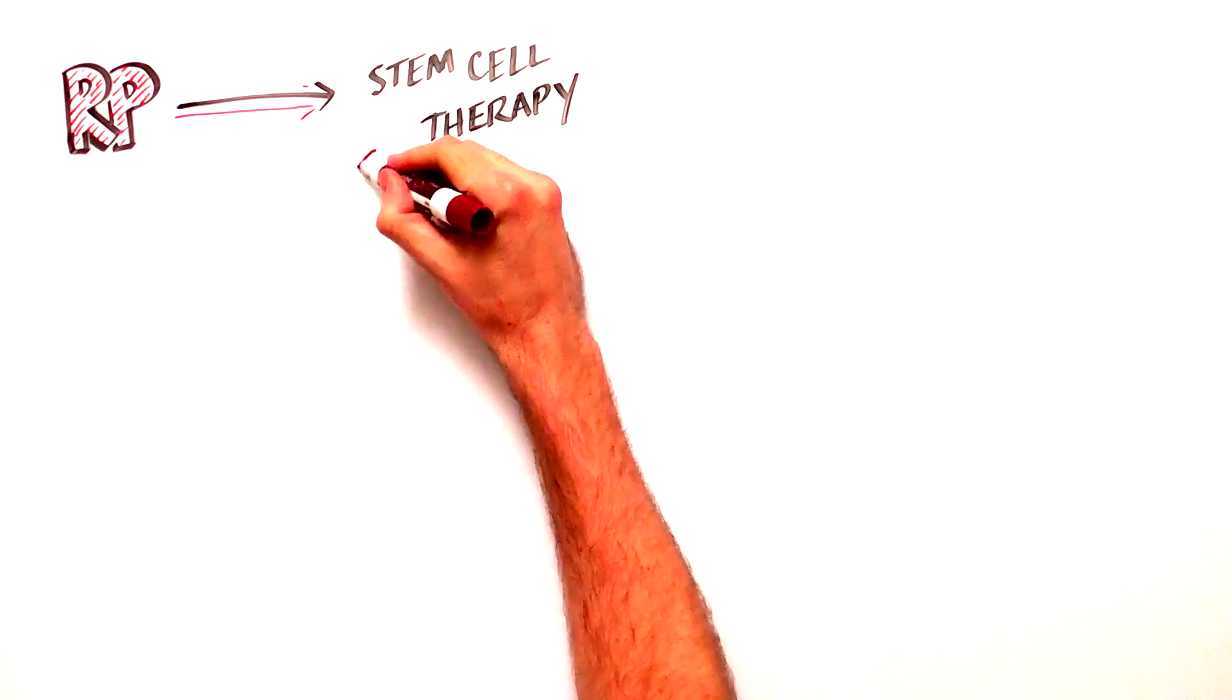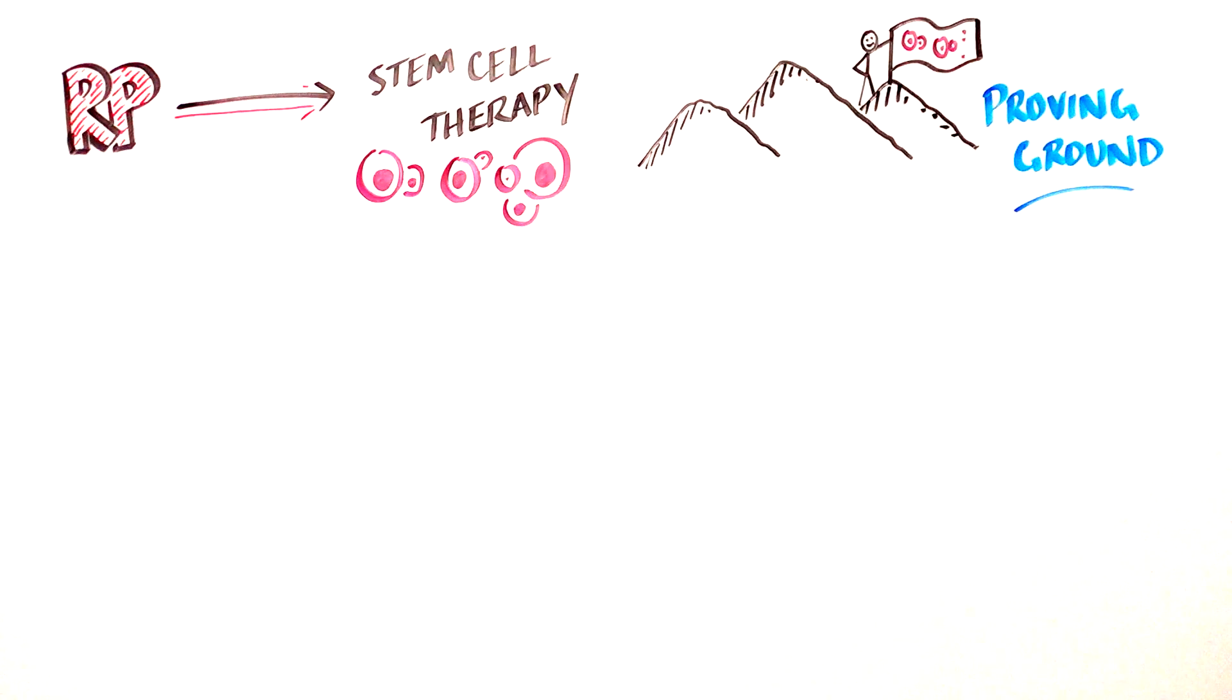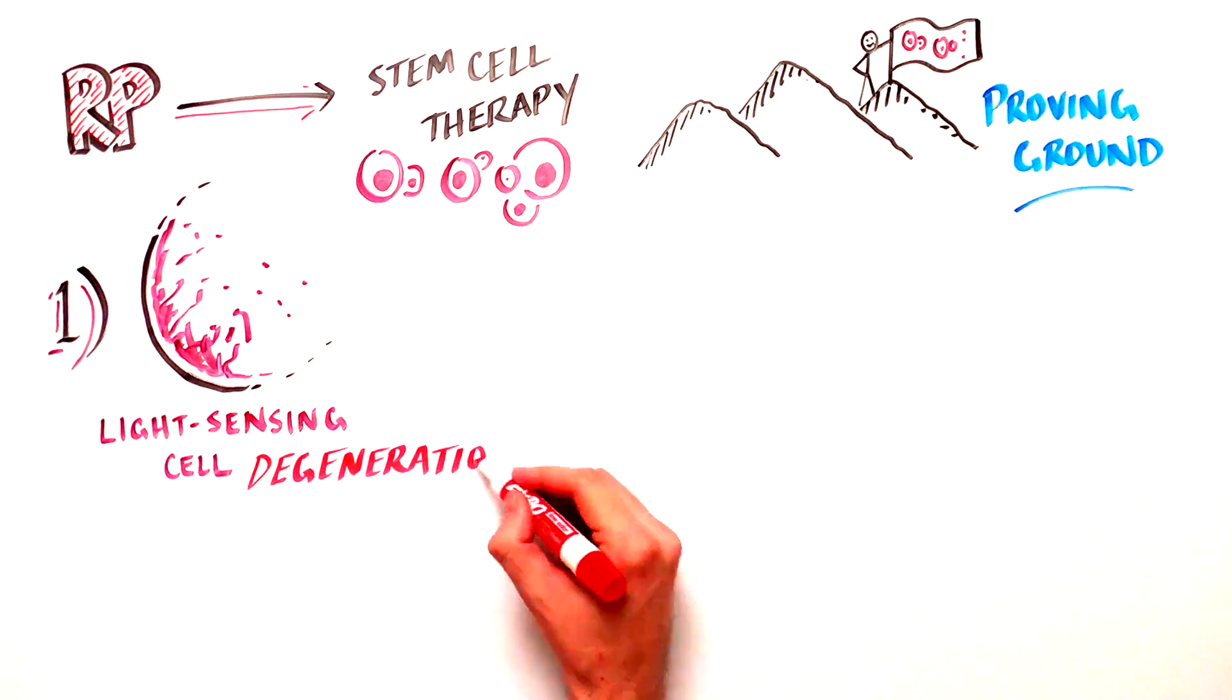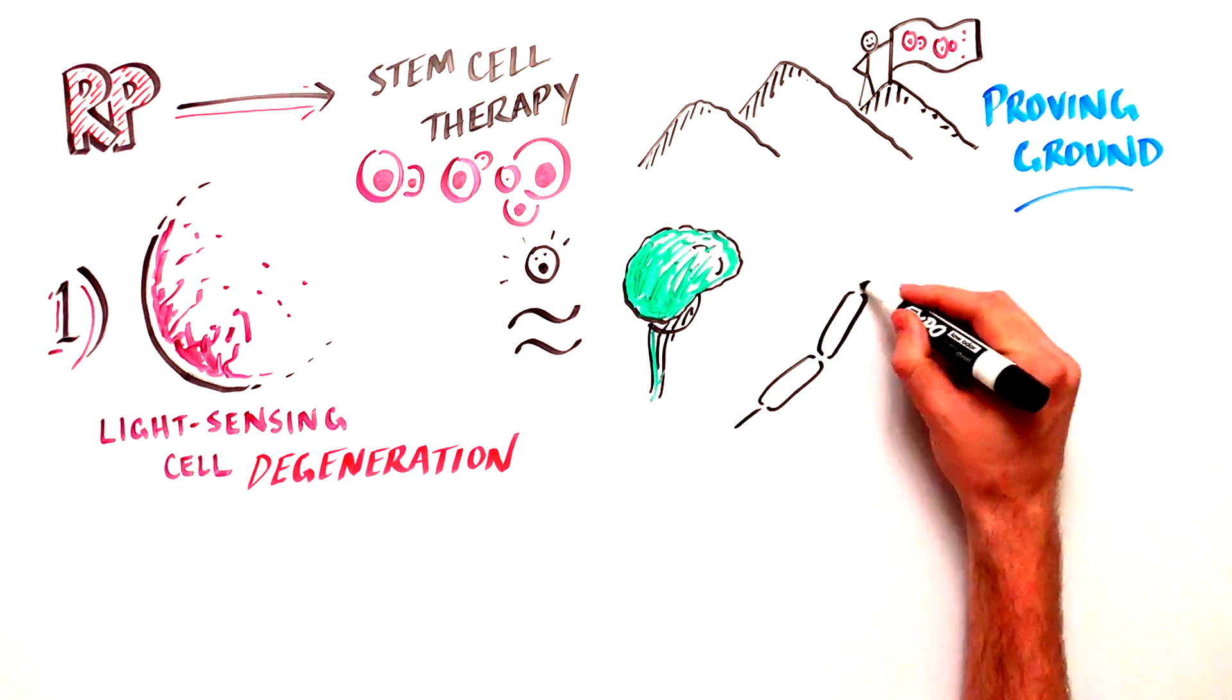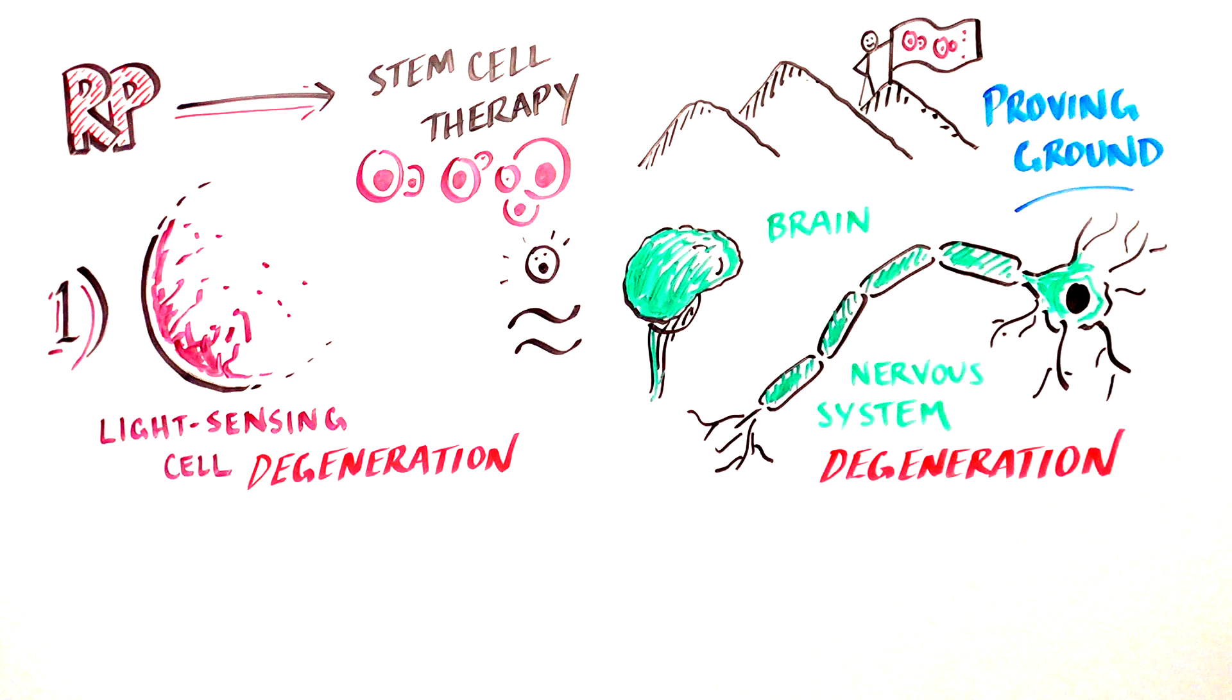Retinitis pigmentosa represents a proving ground disease for stem cell therapy for a number of reasons. First, the degeneration of light-sensing cells in RP is similar to the degeneration of other types of cells in the brain and the nervous system. Thus, RP can serve as a model for common types of neurodegeneration.